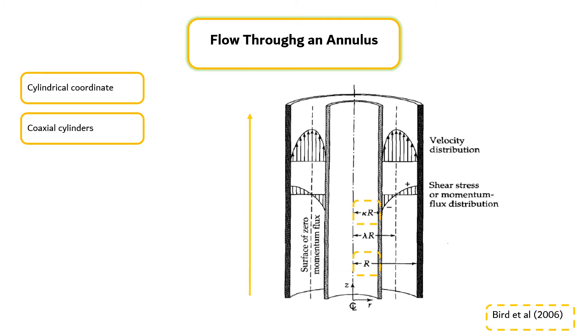We make the same postulate as in the previous segment. Vz equals Vz as a function of R, V theta equals 0, Vr equals 0, and P is a function of z.